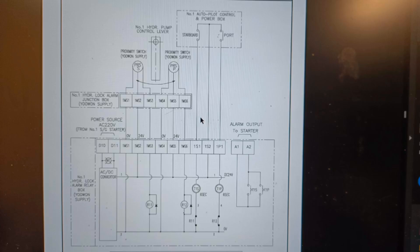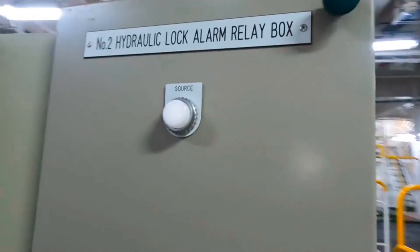...open NO contact of the sensor will change to the NC contact and activate the relay. In case there is an issue with the sensor, the relay will not activate and it will give an alarm. This is the hydraulic lock alarm relay box.